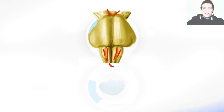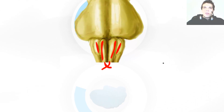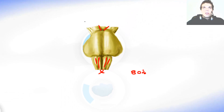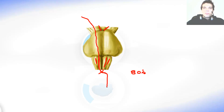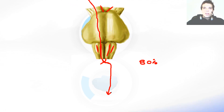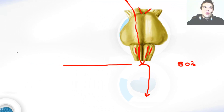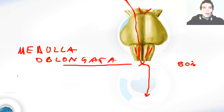Somewhere over here is the decussation of pyramids. It is the place where almost 80% of motor fibers in the pyramids cross. So we have the fibers coming from the brain, going to the pyramids, and at the decussation of pyramids they cross. When they cross the middle line, they continue down as the lateral cerebrospinal fasciculus. This is a very important place, because this is where the spinal cord begins and the medulla oblongata ends. Up there we had the medulla oblongata, and down is the spinal cord.